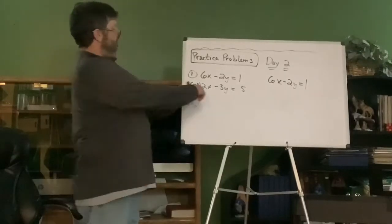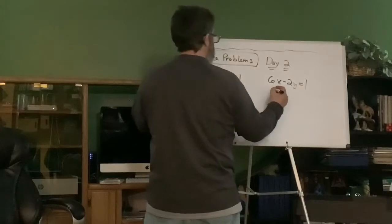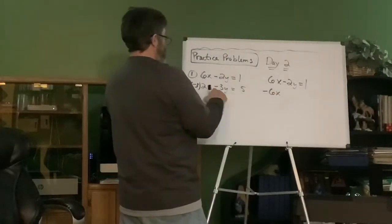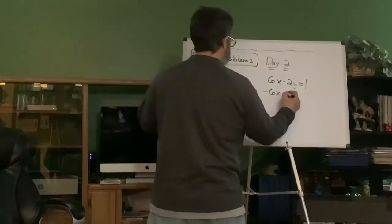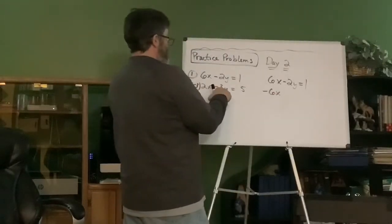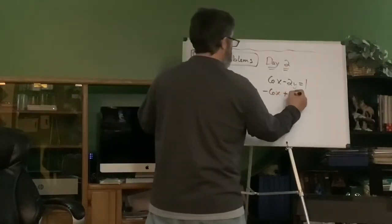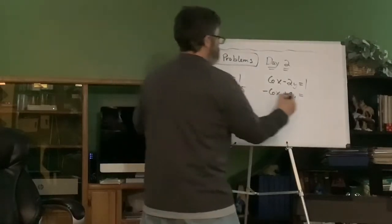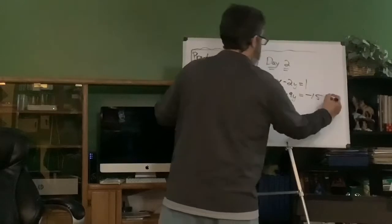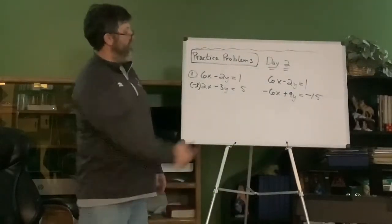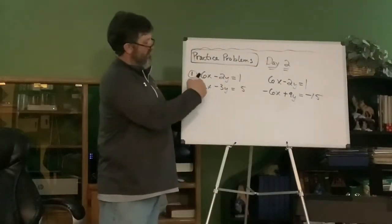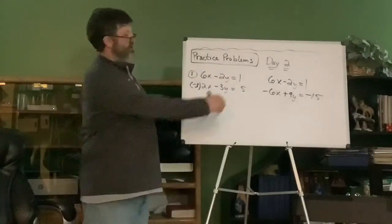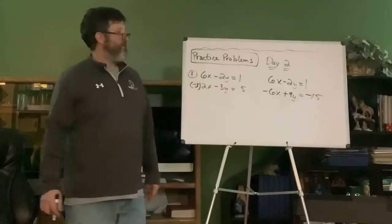Okay, now, here we go. Negative three times two x is a negative six x. Negative three times a negative three is a positive nine y equals negative three times five is negative 15. Now, guess what? That's the piece that most people miss. Yes, they'll take it to here, they'll take it to here, but then they don't take it to that third piece, okay?